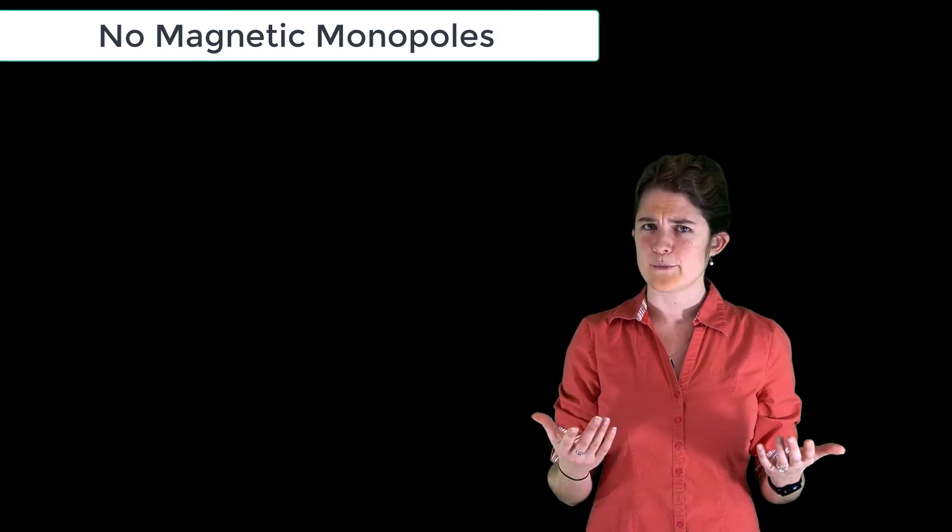There is one major difference between electric and magnetic fields, which is this: there are no magnetic monopoles. What is a monopole? Well, remember how we talked about the electric point charge, a charge location in space that has all outward pointing or all inward pointing field vectors? That's an example of an electric monopole.